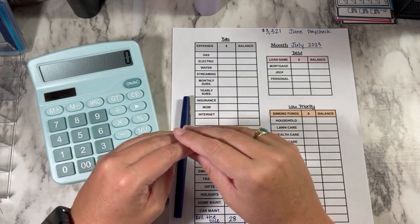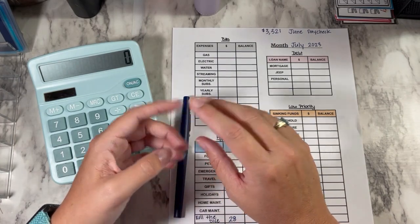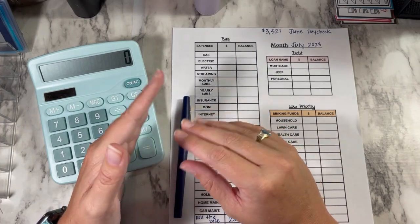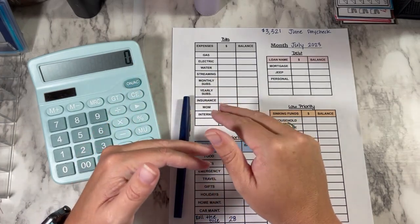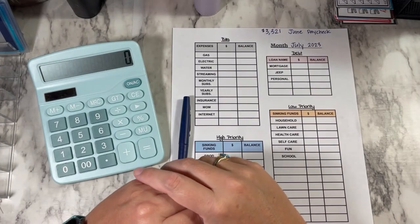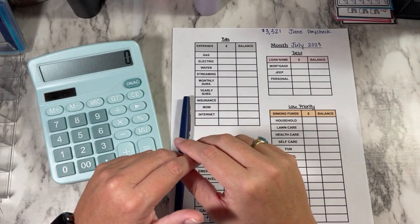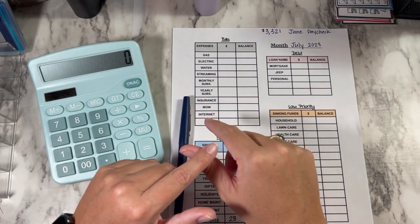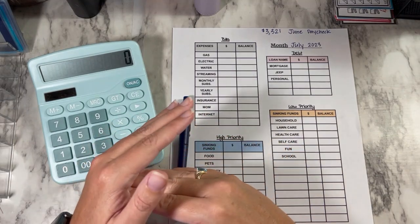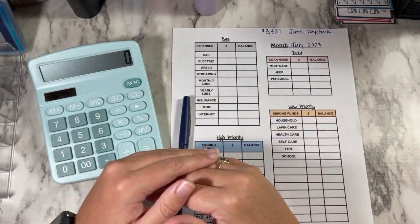I usually get paid on the 25th of every month. If the 25th falls on a holiday or on the weekend, then I usually get paid the Friday before that. So we're actually getting paid on the 23rd this month. So I'm going to go ahead and make my budget for July.